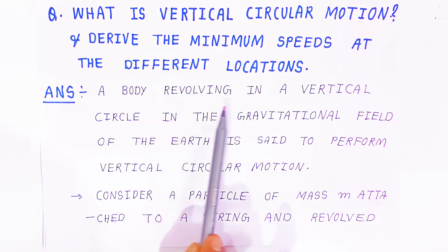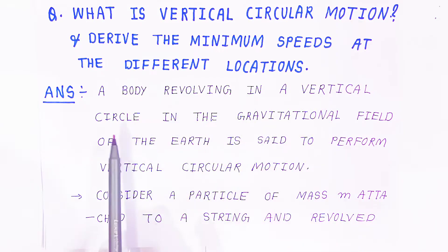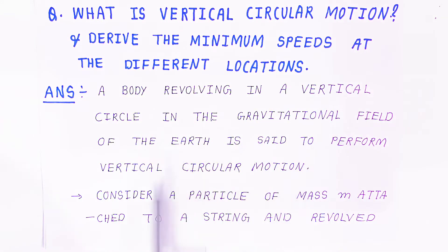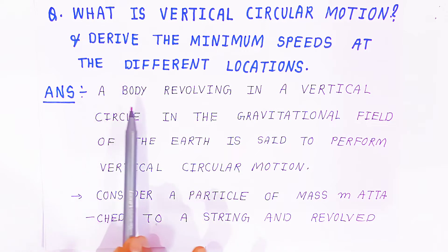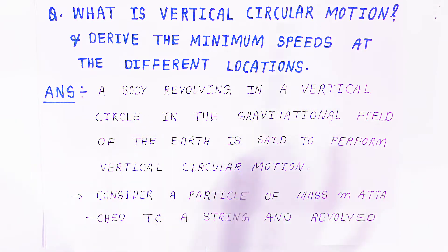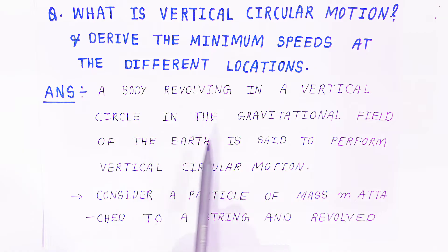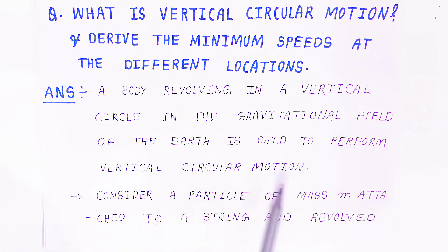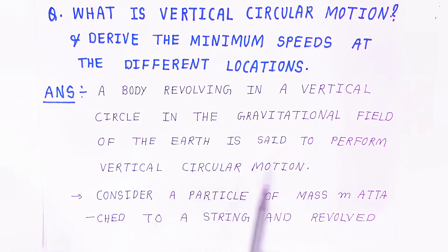A body revolving in a vertical circle in the gravitational field of the earth is said to be performing vertical circular motion. That is the definition of vertical circular motion.